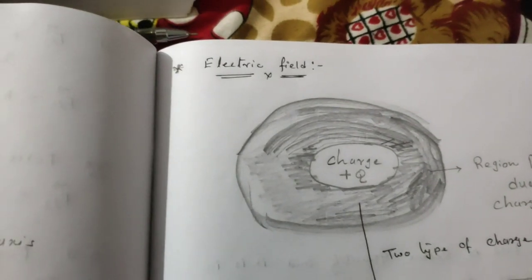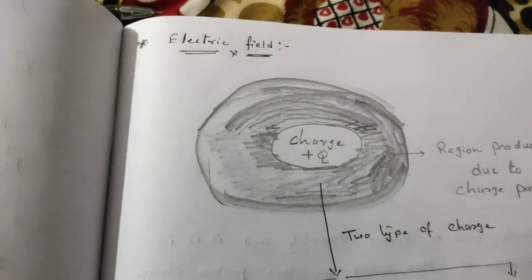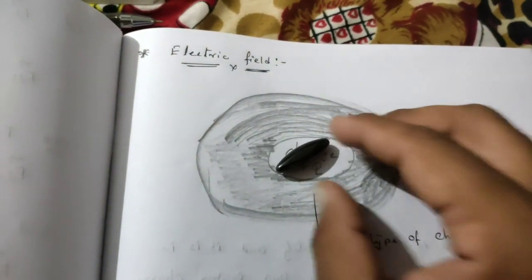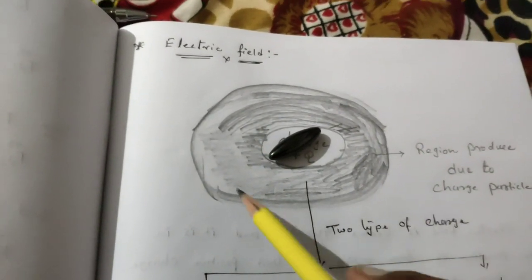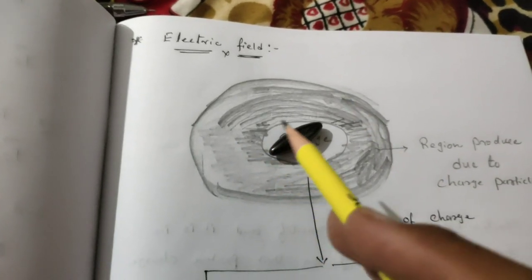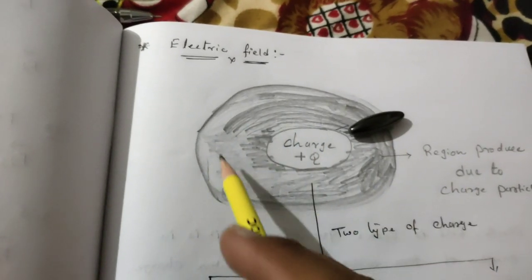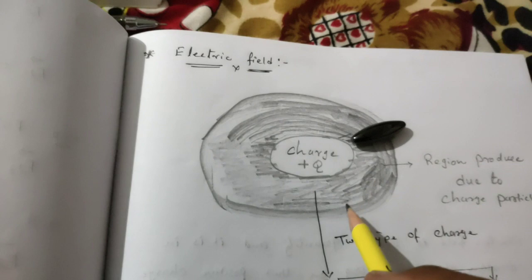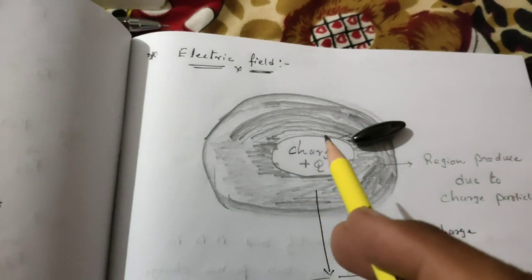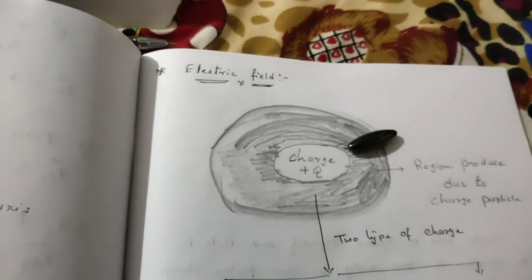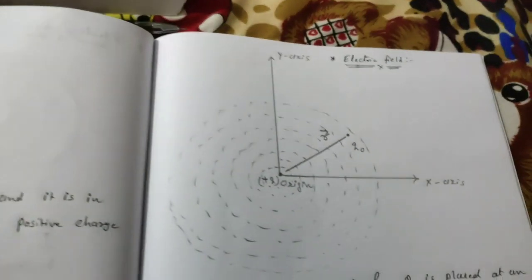Now let us move towards our topic today. Charge is a source of energy — it is a fundamental intrinsic property. While one charge is placed here, surrounding this charge one invisible field is created. Since this is an electric charge, the region created by this charge is known as the electric field. This is the topic for today.